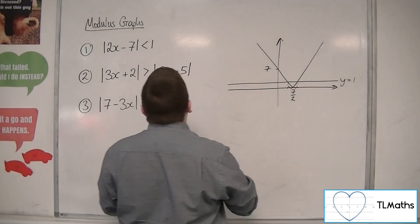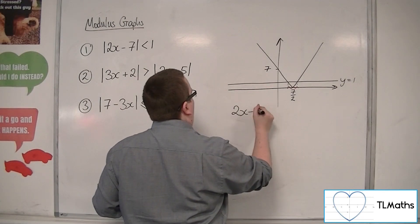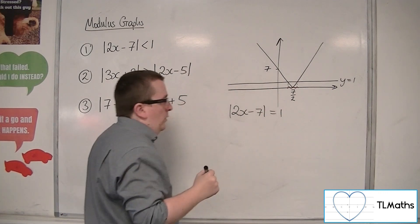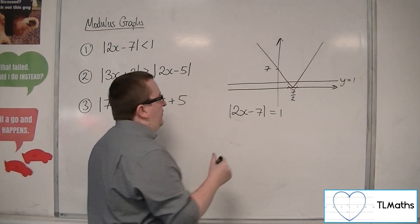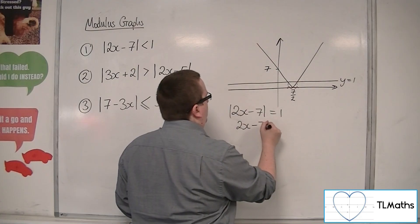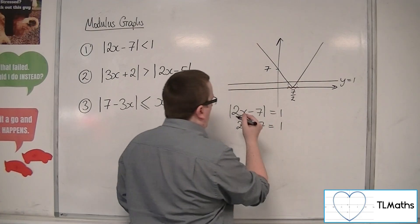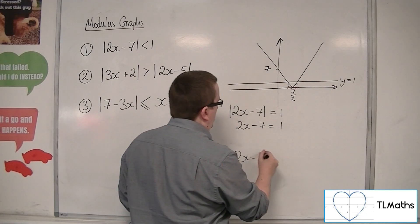I want to know where the modulus of 2x minus 7 meets the line equal 1. So, either the 2x minus 7 was equal to 1, or it was equal to minus 1.